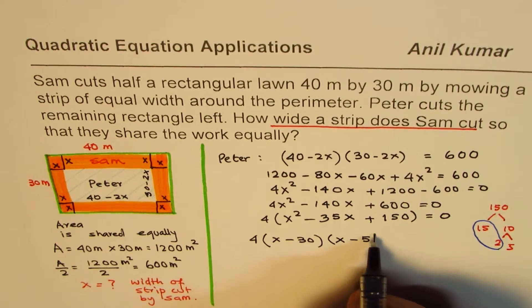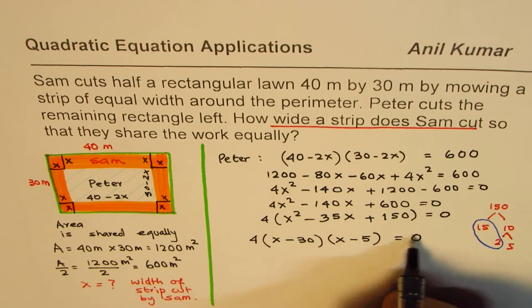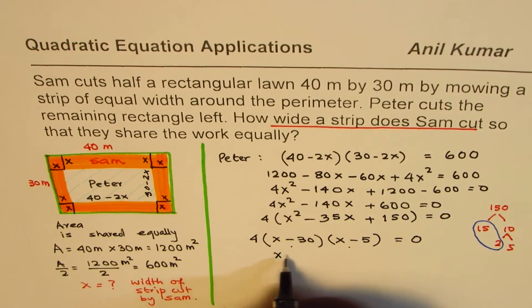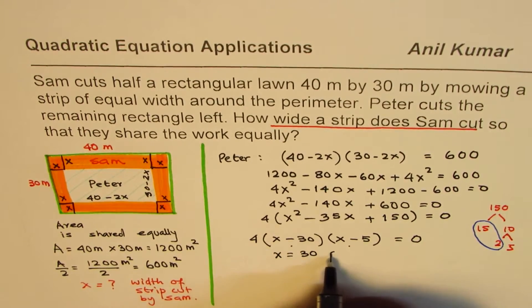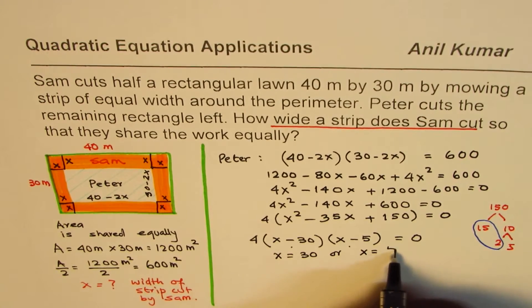We get 4 times, we will factor this as (x - 30)(x - 5), equals 0. These two factors can be 0 only for x equals 30 or x equals 5.